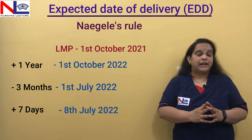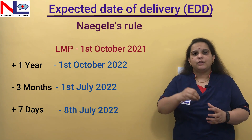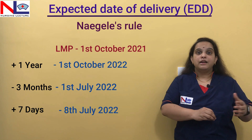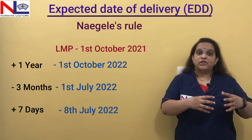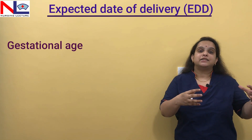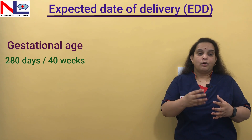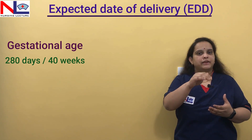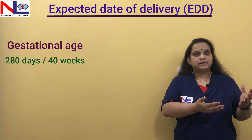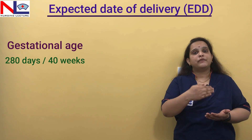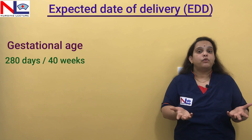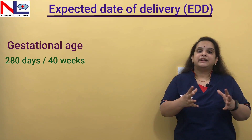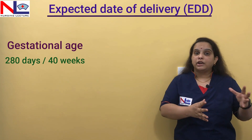A common question is: why do we take the first day of the last menstrual period? Because the gestational age is about 280 days. If you calculate in weeks, divide by seven — since one week has seven days — and 280 days equals 40 weeks. So the gestational age or period is about 280 days or 40 weeks.